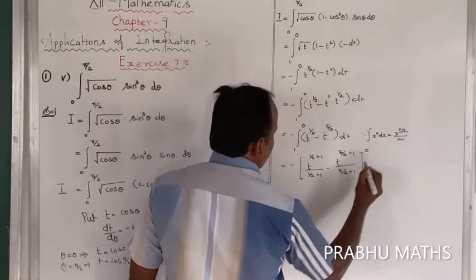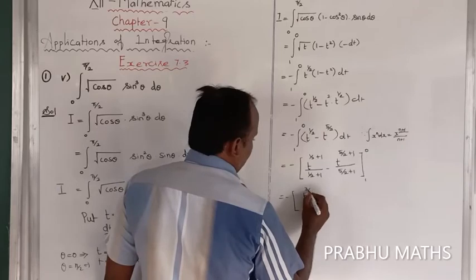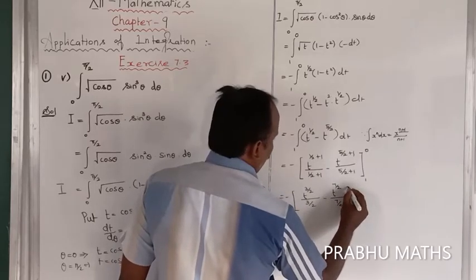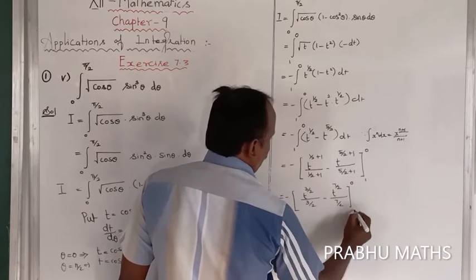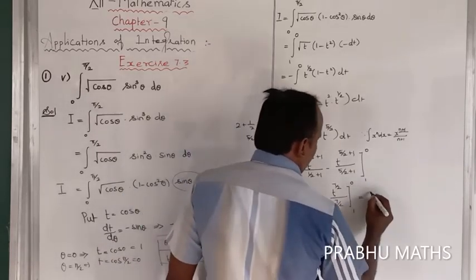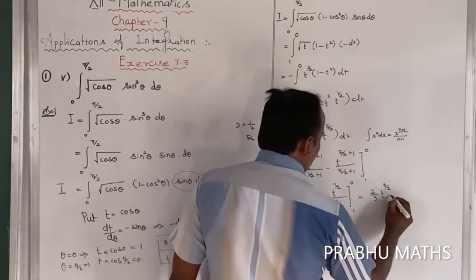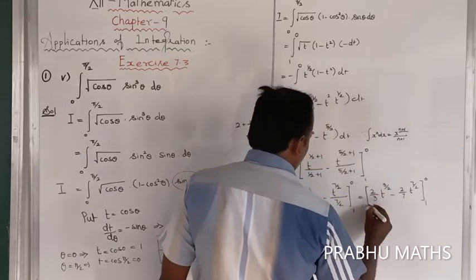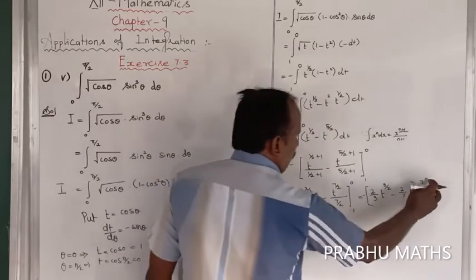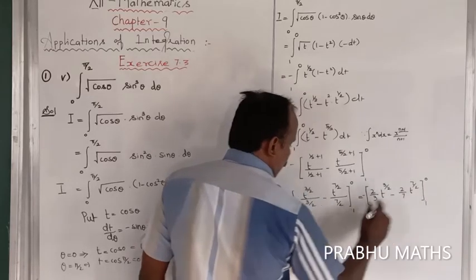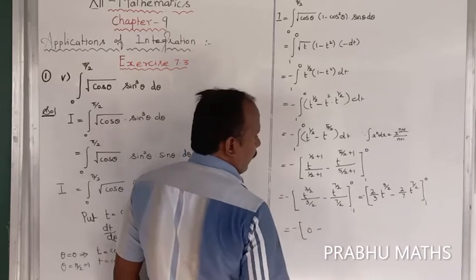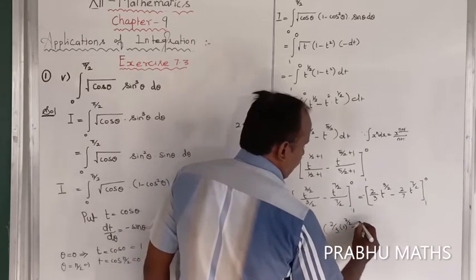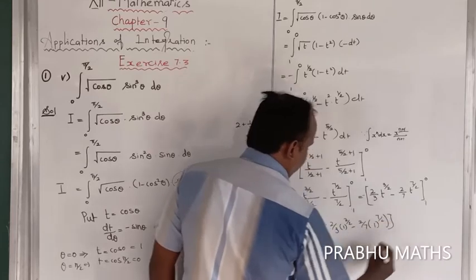Simplifying the fractions: t^(3/2)/(3/2) = (2/3)t^(3/2) and t^(7/2)/(7/2) = (2/7)t^(7/2). Evaluating from 1 to 0: the upper limit (t = 0) gives zero for both terms. The lower limit (t = 1) gives (2/3)(1)^(3/2) - (2/7)(1)^(7/2) = 2/3 - 2/7.